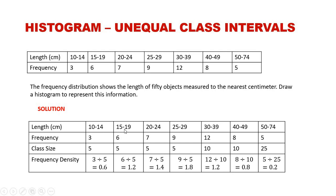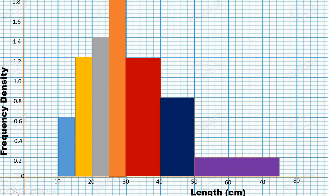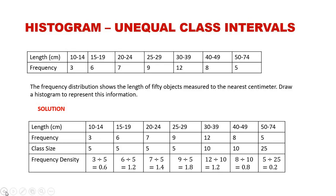For 15 to 19, the class size is also 5 and the frequency density is 1.2, so the bar width is 5 and the height reaches 1.2. Next, 20 to 24 also has a class size of 5 with a frequency density of 1.4.